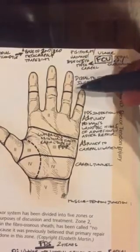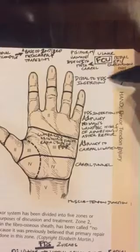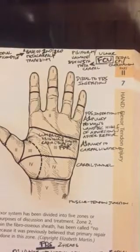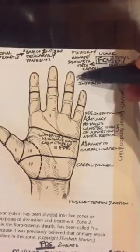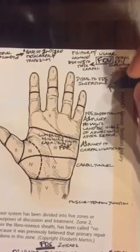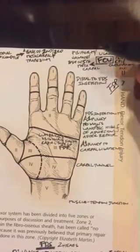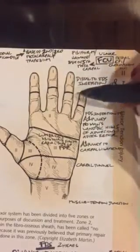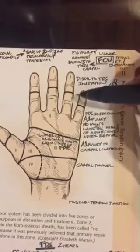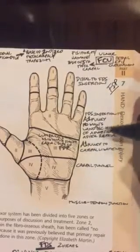Because the distal aspect of the finger after the insertion of the FDS or flexor digitorum superficialis, that means zone one is only an FDP injury. Now from the insertion of the flexor digitorum superficialis proximal all the way to the A1 pulley.